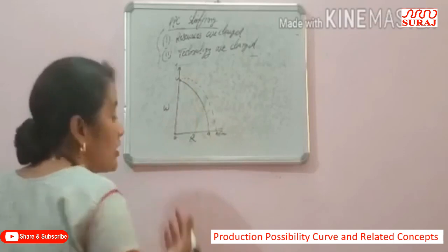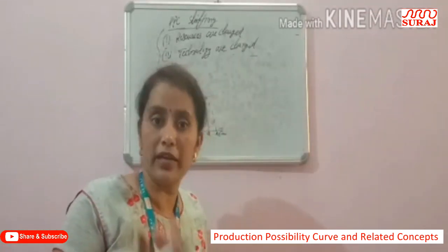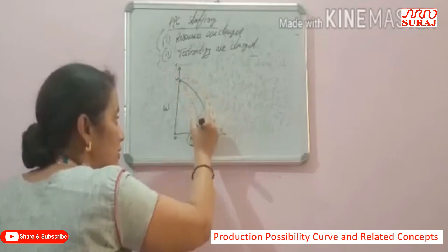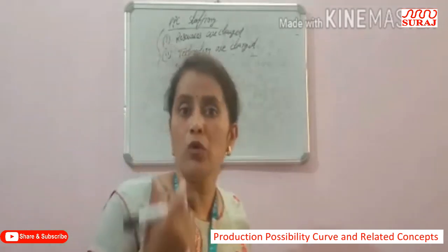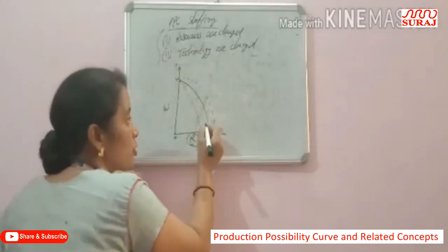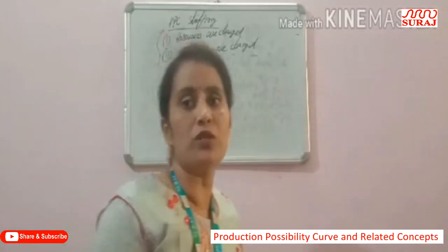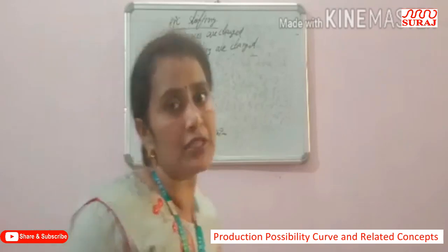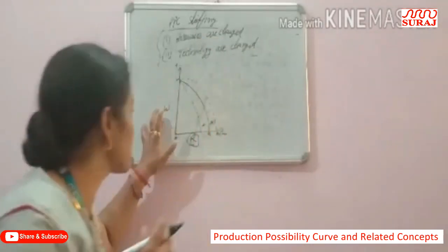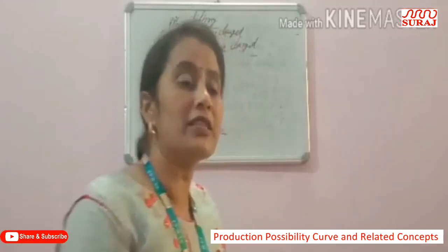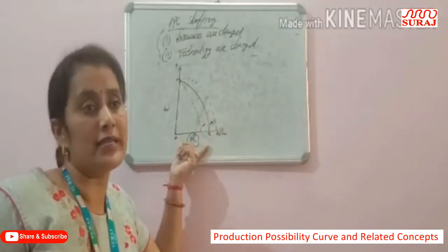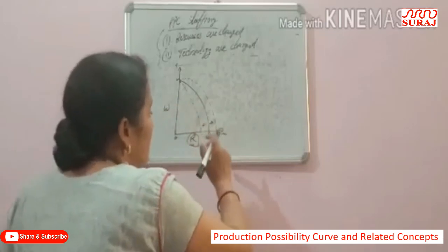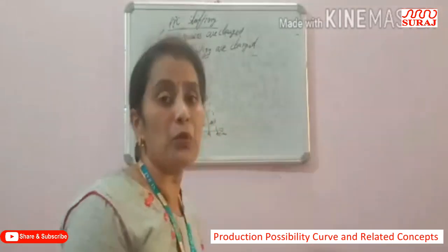As well as, if the producer uses innovative technology only in the production of wheat and there is no change in technology for rice, then wheat production rises but there is no change in the production of rice. So this shows the movement along the Production Possibility Curve. To summarize: shifting occurs when both goods are affected; movement occurs when only one good's production changes.